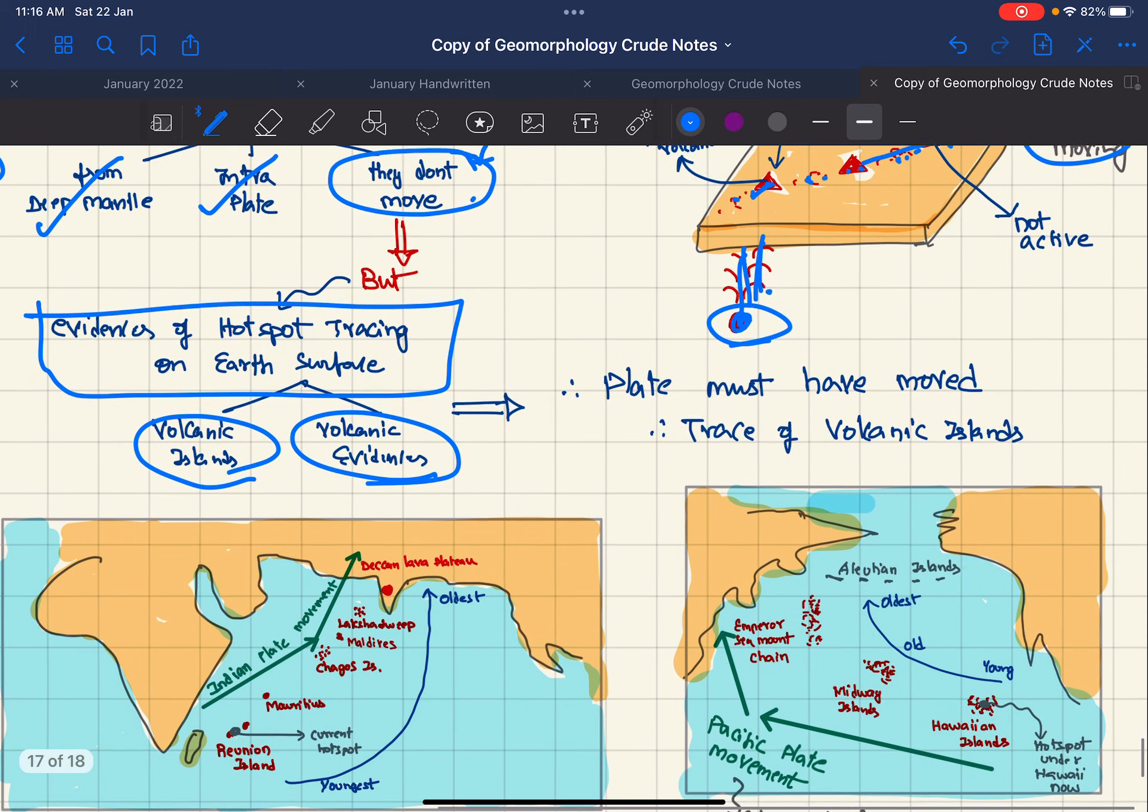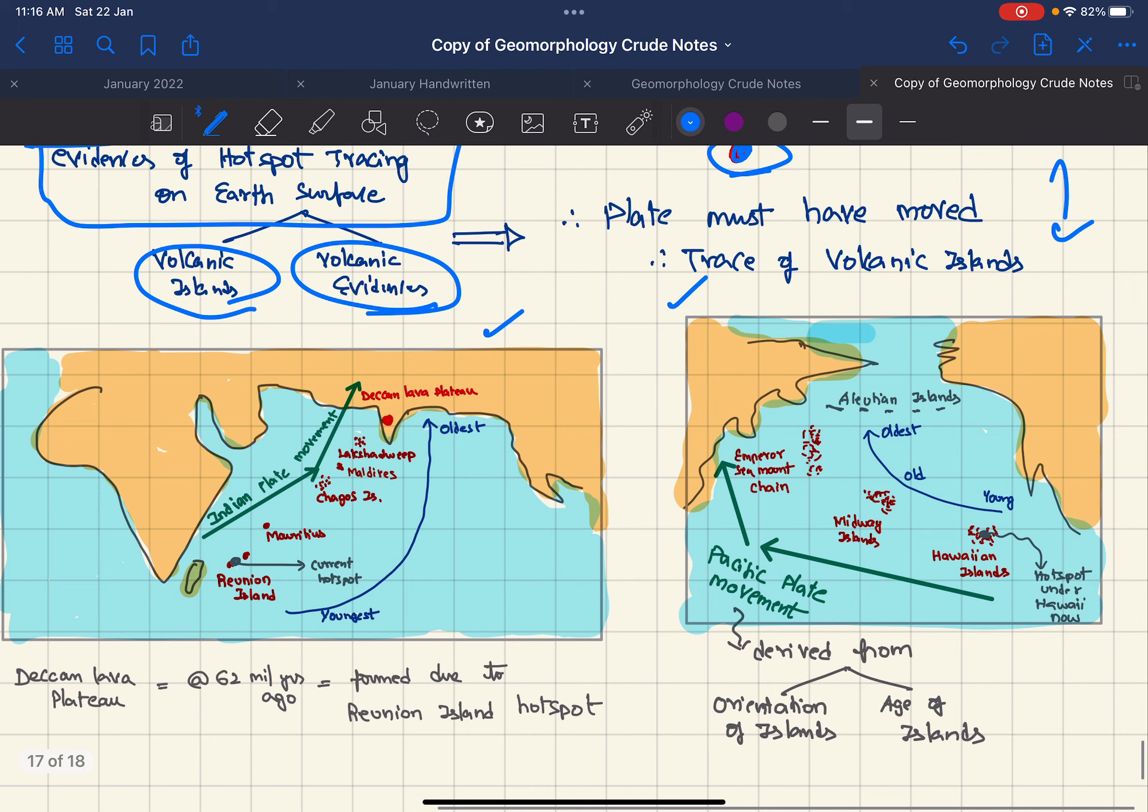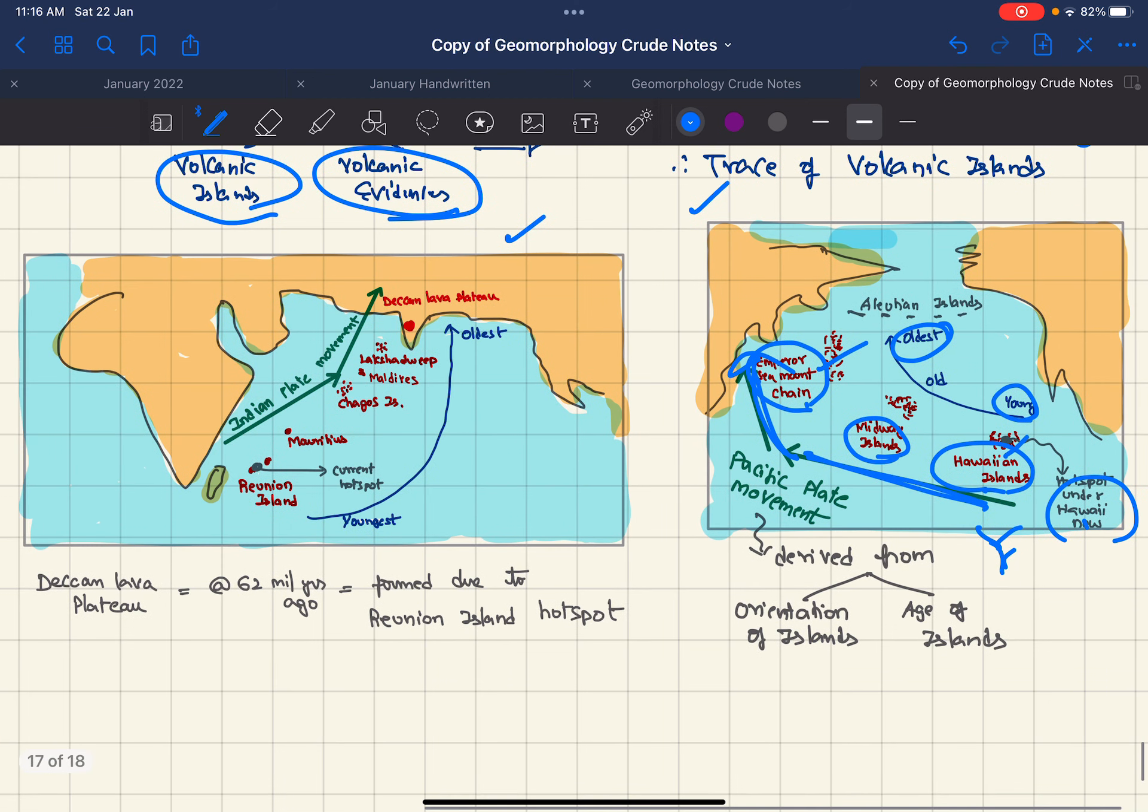This can be seen in the real world in both Pacific Ocean and Indian Ocean. In the Pacific Ocean we have the Hawaiian Islands, the Mid-Pacific Mountains, and the Emperor Seamount Chain. All these islands have been formed from volcanism erupting from the Hawaiian hotspot. Emperors are the oldest and Hawaiian are the youngest, so we can see the Pacific plate is moving. From this we can derive the orientation and age of islands.